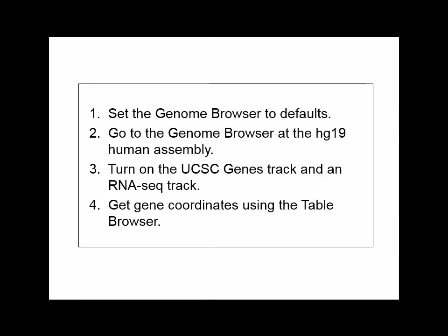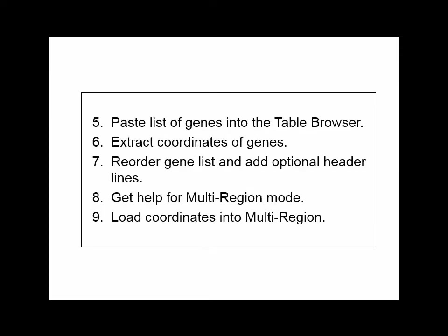We will work with the Human Assembly HG19, because it has some nice RNA-seq data to view, but the method is generally applicable to any genome assembly. We will use a set of genes as the source of the coordinates for the regions to view. This feature will allow you, for example, to look at your RNA-seq data for a pathway or other group of interesting genes all at the same time, even though they are not together in the genome.